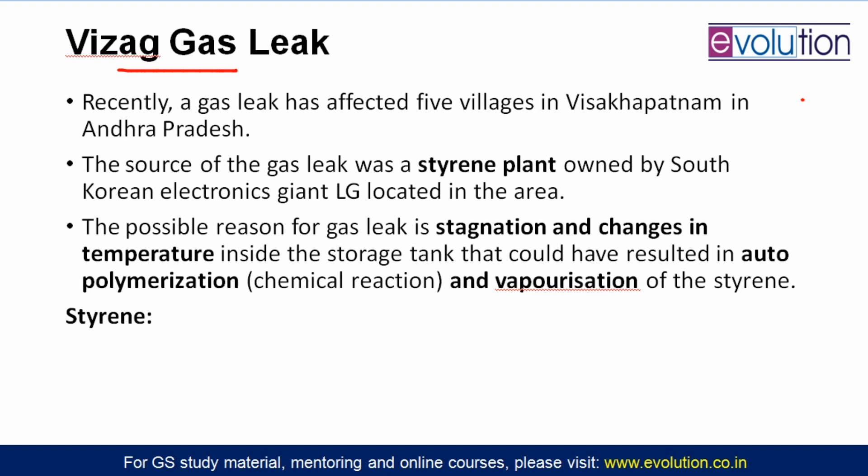Recently, in the early hours of a day in May, a gas leak happened in five villages in Vishakhapatnam, Andhra Pradesh. The source was an LG Electronics plant — a South Korean company — which has a polystyrene manufacturing plant there. Polystyrene is the polymer of styrene. Styrene is a colorless liquid used to make plastics, but when heated above approximately 20 degrees Celsius, it converts from liquid to vapor form, which becomes dangerous and potentially lethal for people living nearby.